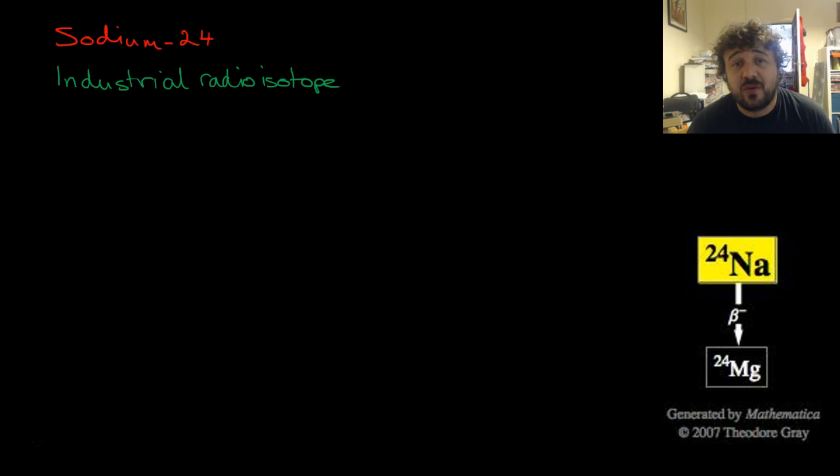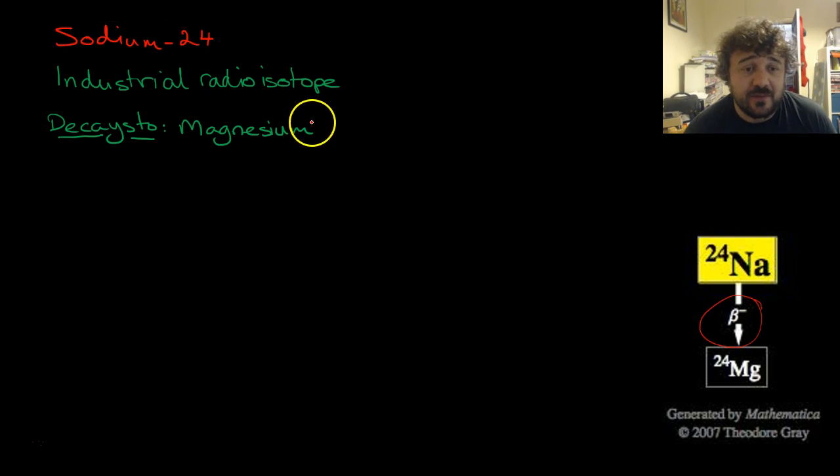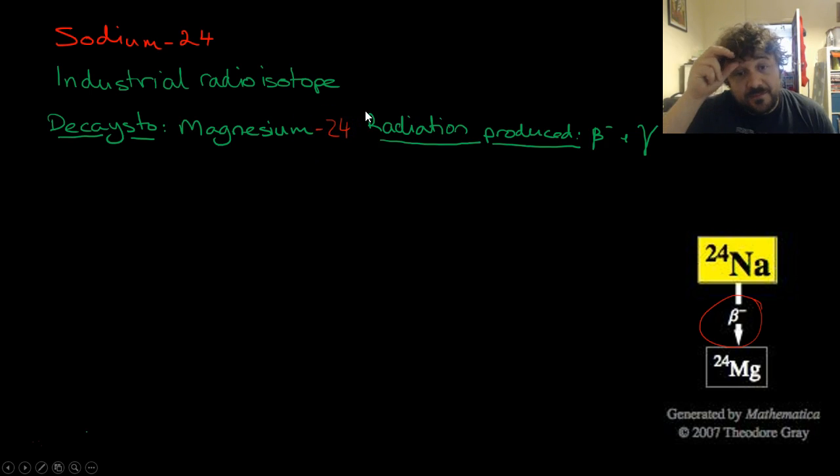We're going to look at sodium-24, which is an industrial radioisotope. And what we can see down here is that it decays via beta-decay to magnesium-24. We can write that there if we want, magnesium-24. The radiation produced is beta-radiation and gamma. It's actually the gamma-radiation here which is most useful.